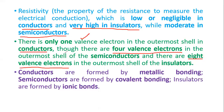Regarding the type of bonding: conductors have metallic bonding properties, semiconductors have covalent bonding properties, and insulators have ionic bonding properties. These are the properties of conductors, semiconductors, and insulators — the basics of electronics.